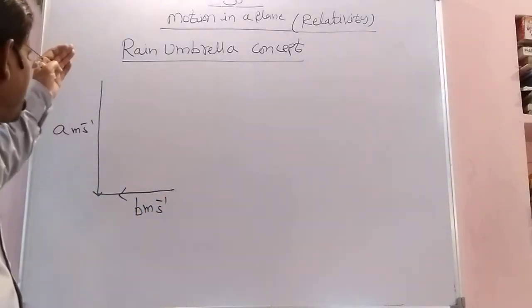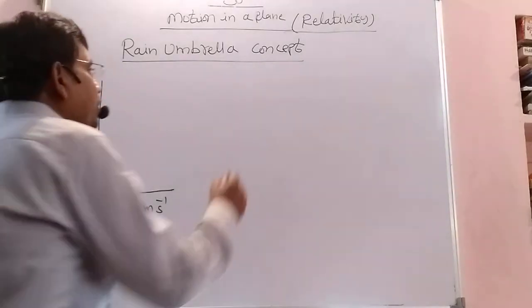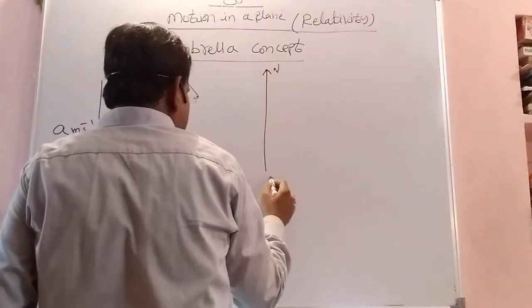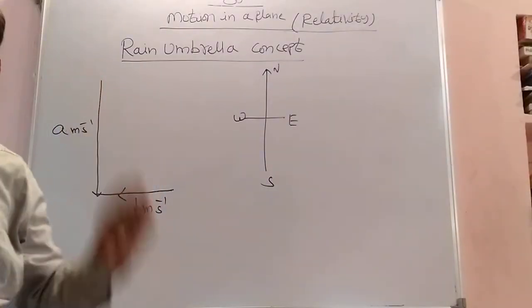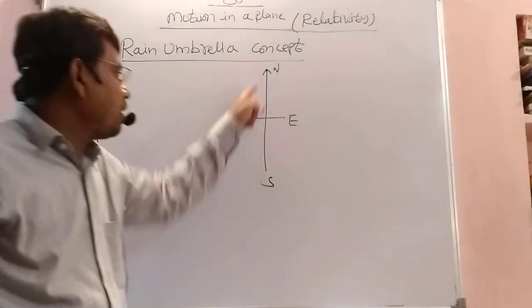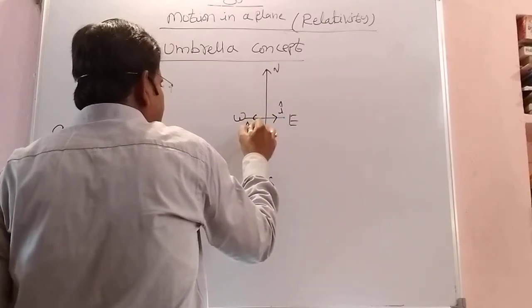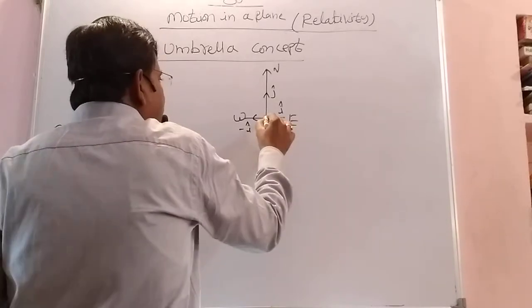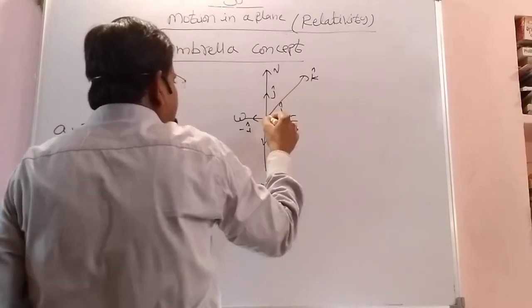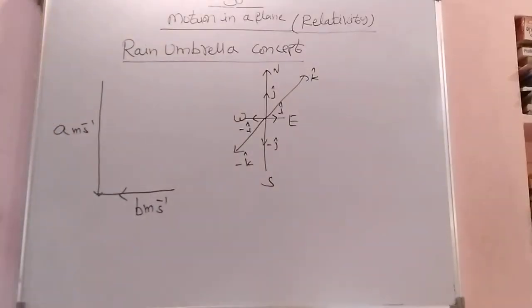Rain is falling vertically downward with 'a' meters per second. This is a three-dimensional diagram. We have north, south, east, west directions. Vertically downward and vertically upward belong to the k-component. East direction is taken as i, west as minus i, north as j, and south as minus j. Vertically upward is plus k and vertically downward is minus k.